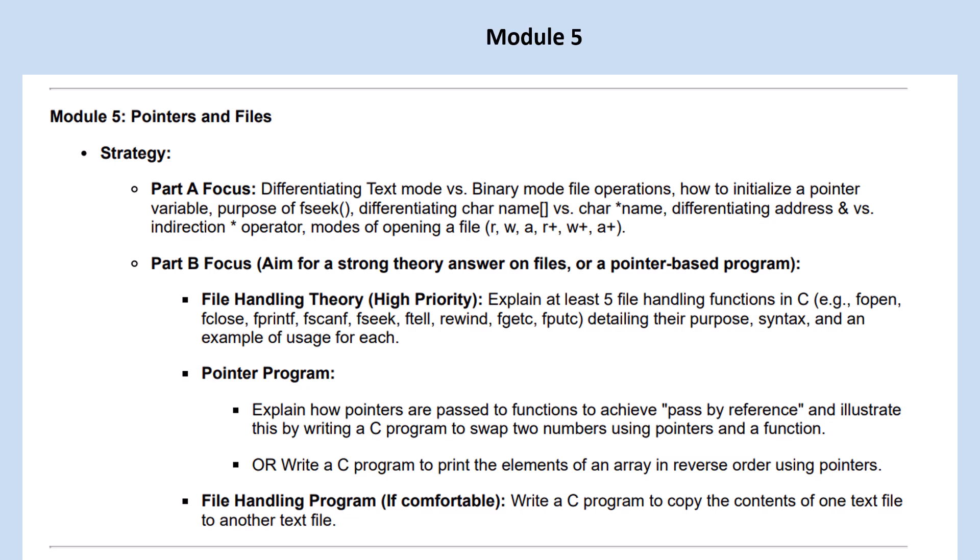Then coming to part B, you have time for a strong theory answer on files or a pointer-based program. File handling high priority is the theory question: explain at least five file handling functions in C - example fopen, fclose, fprintf, fscanf, fseek, ftell, rewind, fgetc, fputc. From these, five file handling functions you have to detail their purpose, syntax and an example of usage for each. So that is about the theory question, which is of high priority file handling.